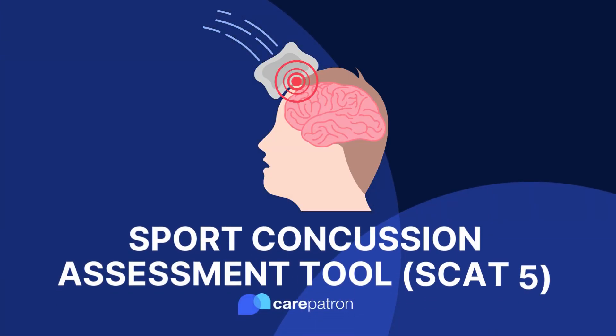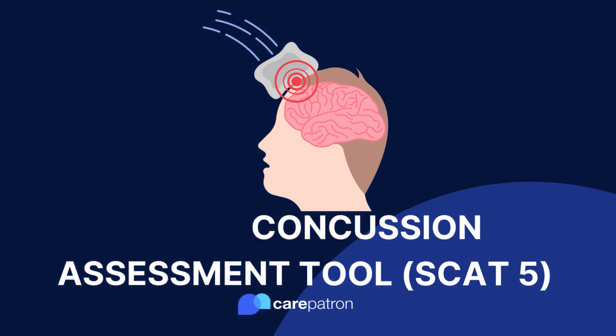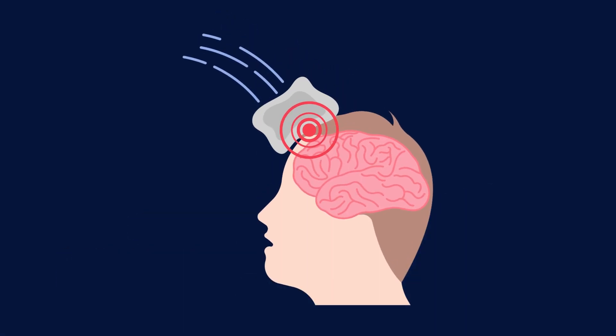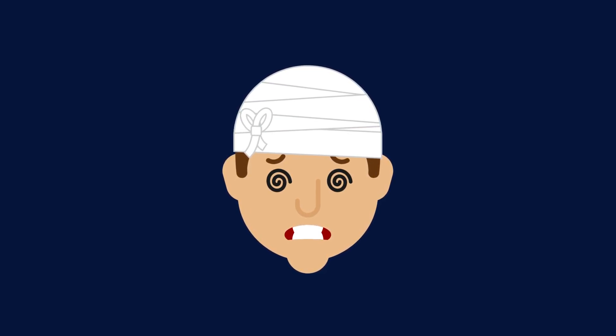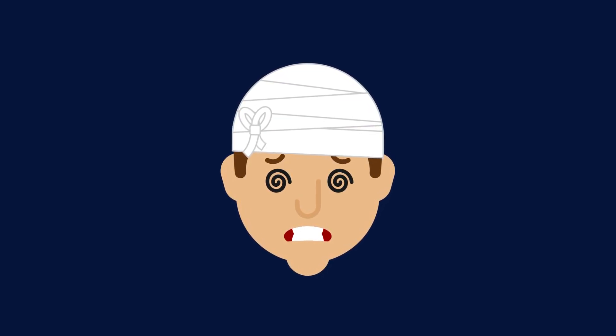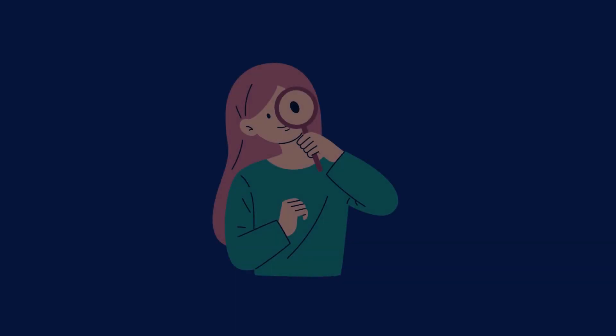The Sport Concussion Assessment Tool 5th Edition, or the SCAT-5 for short, is a screening tool used to assess athletes for concussions. This tool can help with the lead-up to a diagnosis by identifying the factors that point towards a possible concussion, and even after the diagnosis by aiding with treatment by guiding professionals based on the results of the SCAT-5 and the testing.